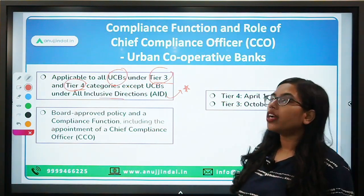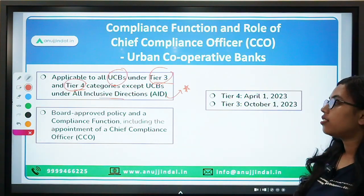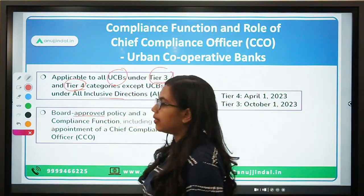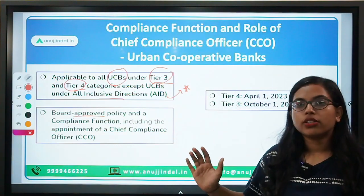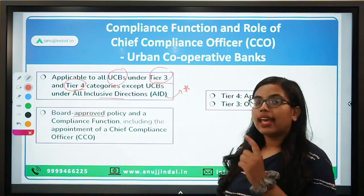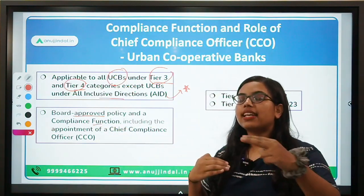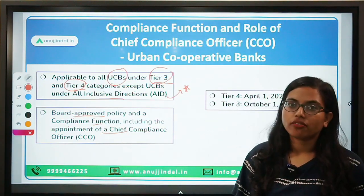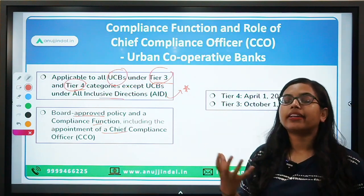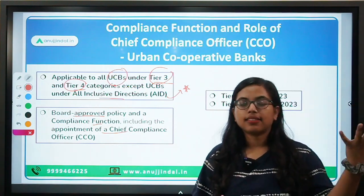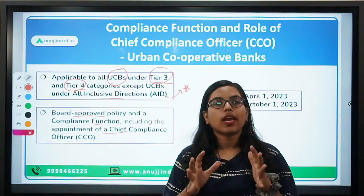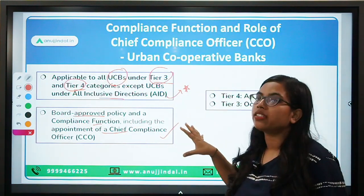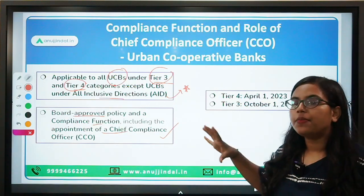The compliance functions will consist of a board-approved policy. The board of directors of the UCB will approve a policy as well as a compliance function, a complete list of policies that need to be followed, as well as the appointment of a Chief Compliance Officer. This CCO will act as a mediator between the urban cooperative bank and the regulators, and the entire department of the compliance function will be headed by this person.